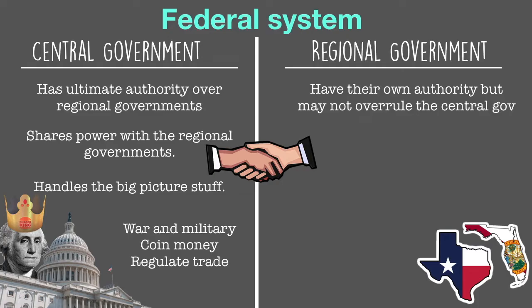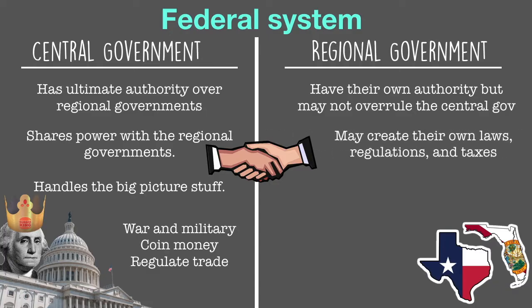Each state or region is going to have its own authority, but it can't overrule the national government. We wouldn't want the regional governments to override Washington DC. Now with this authority, states are going to be able to create their own laws, regulations, even taxes. Essentially all of the small picture stuff will be handled by the regions.